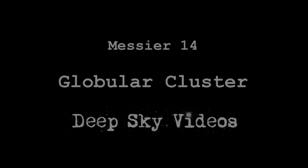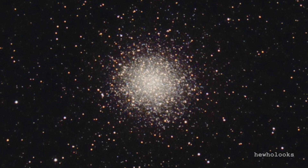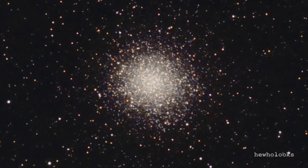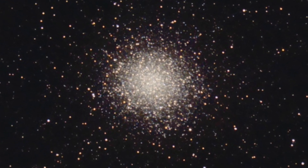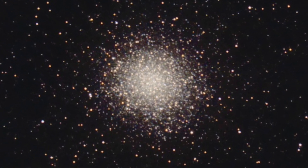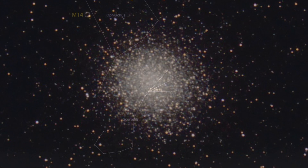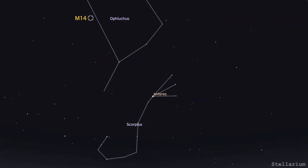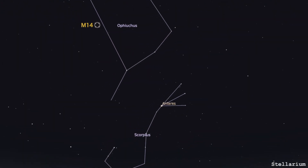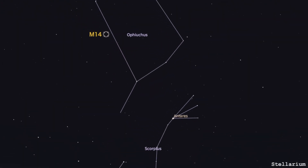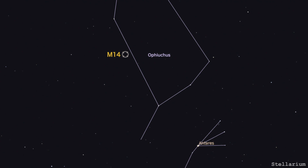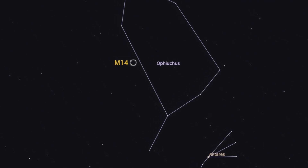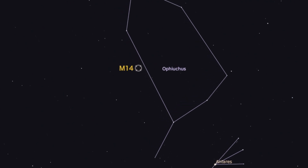It's a pretty average globular cluster — about 100,000 stars or so, about 30,000 light years away. And it's actually a pretty good target for anybody who wants to see it in the night sky themselves. If you've got binoculars, it's supposedly very easy to find, and it's in the constellation of Ophiuchus.